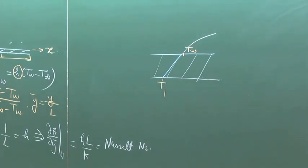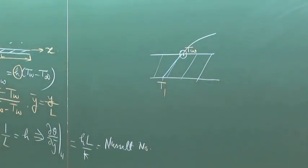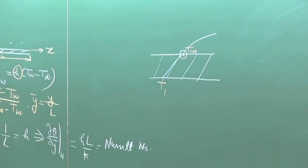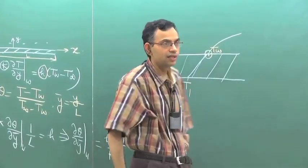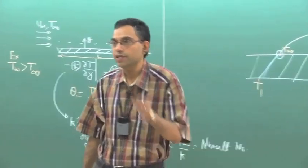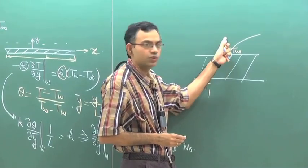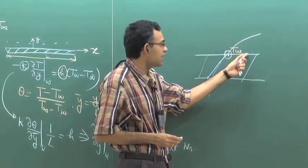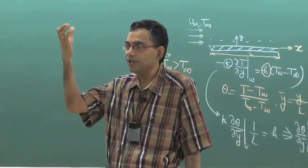Importantly, what is continuous at the interface between the solid and the fluid? Temperature is continuous — at a given point you cannot have two different temperatures, one in the solid and one in the fluid. So there must be continuity of temperature. Second, the heat flux must be continuous: the rate at which heat is transferred from solid to fluid at the interface is the same rate at which heat leaves into the fluid, because the interface has no thermal storage capacity.